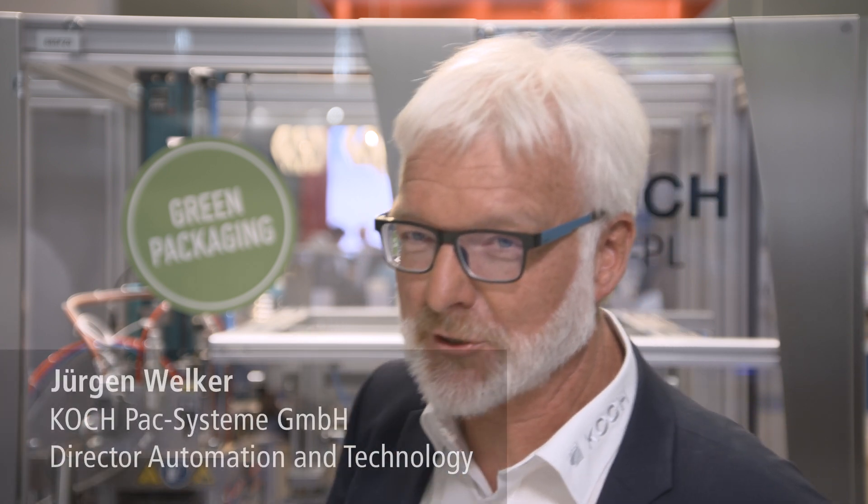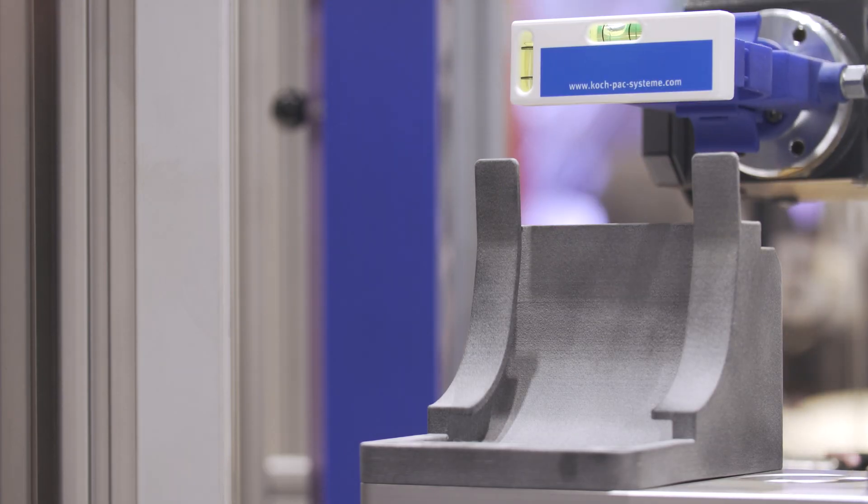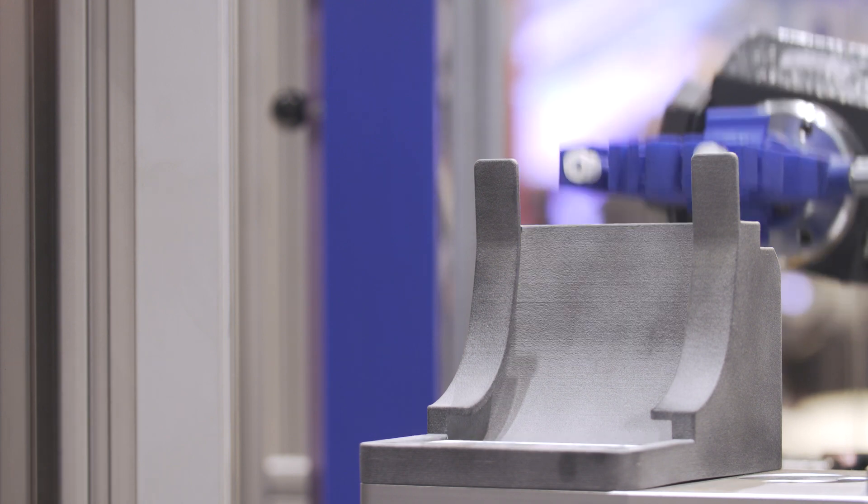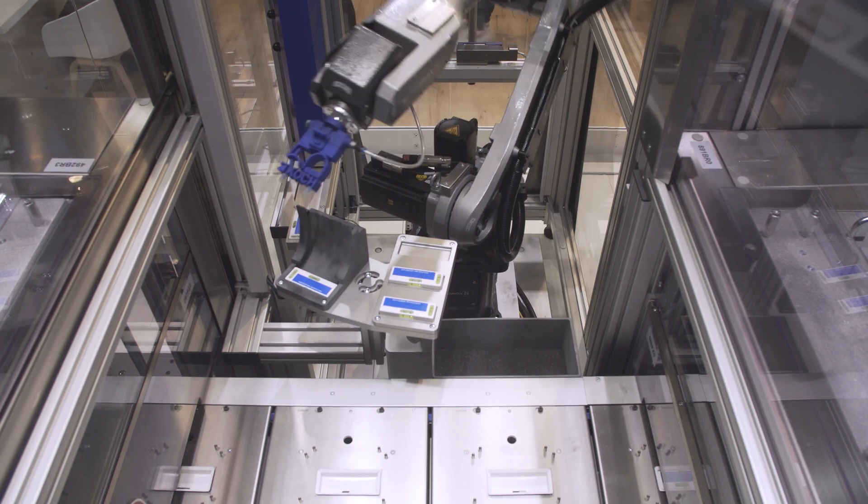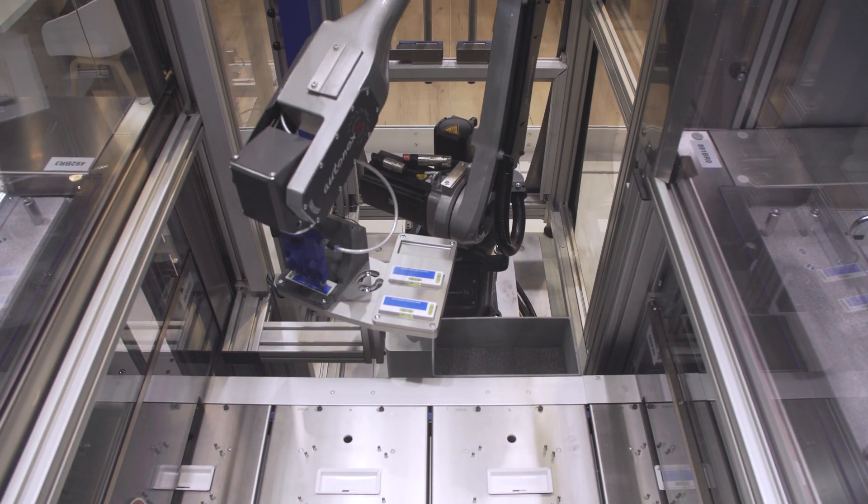Together with Beckhoff, we have put a 6-axis robotic system into operation here on this trade show machine for the first time. And the great advantage of that is that we no longer need a robot controller of our own, but can use Beckhoff TwinCat to control the robot kinematics.